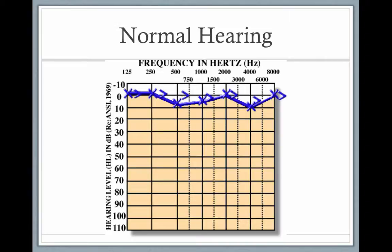In normal audiograms, you have air and bone conduction better than 15 decibels. With children, we really want them to be able to hear super well. This figure shows a left ear — the X's are air conduction, the carets are bone conduction — and all of the thresholds are within the normal range, so normal hearing.